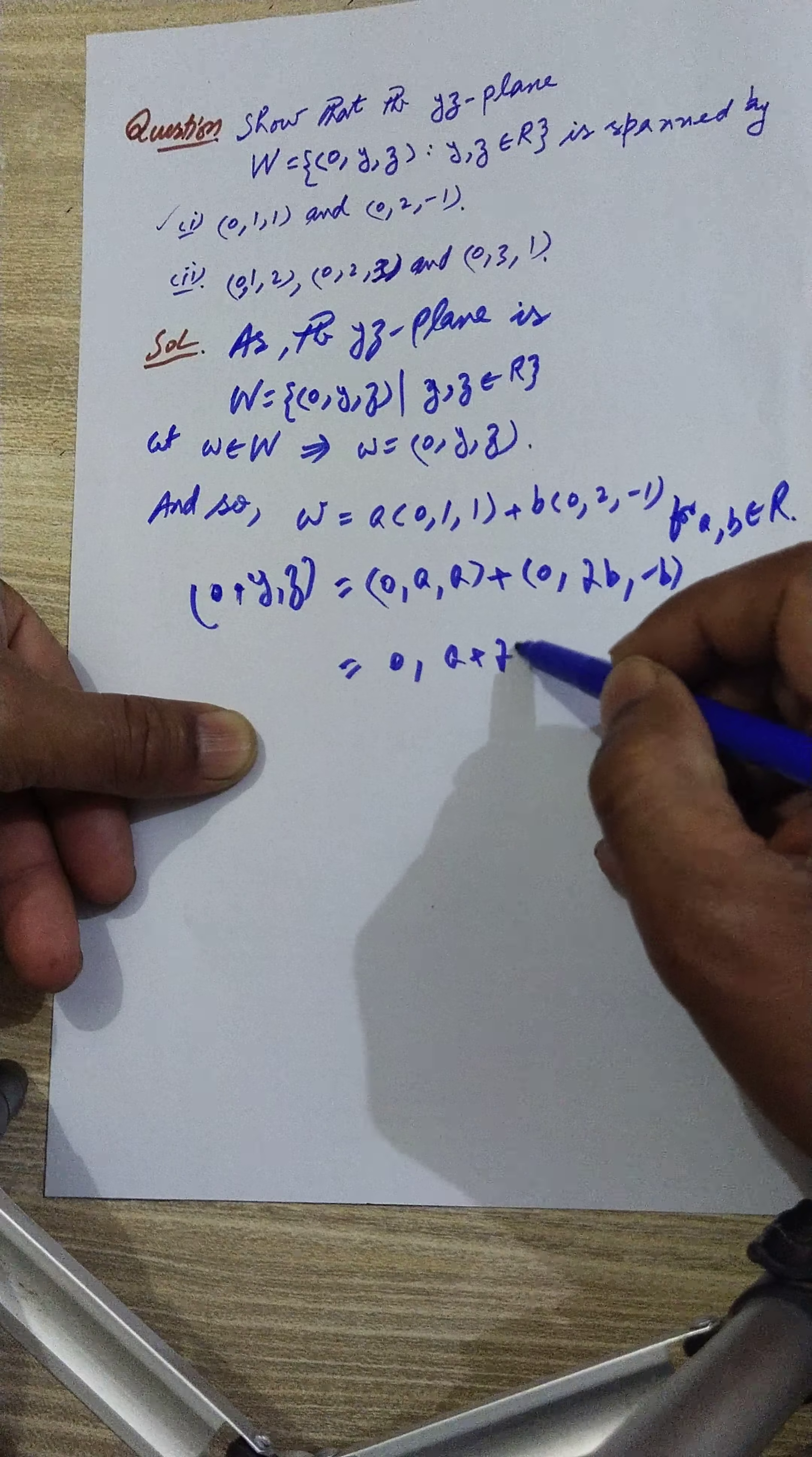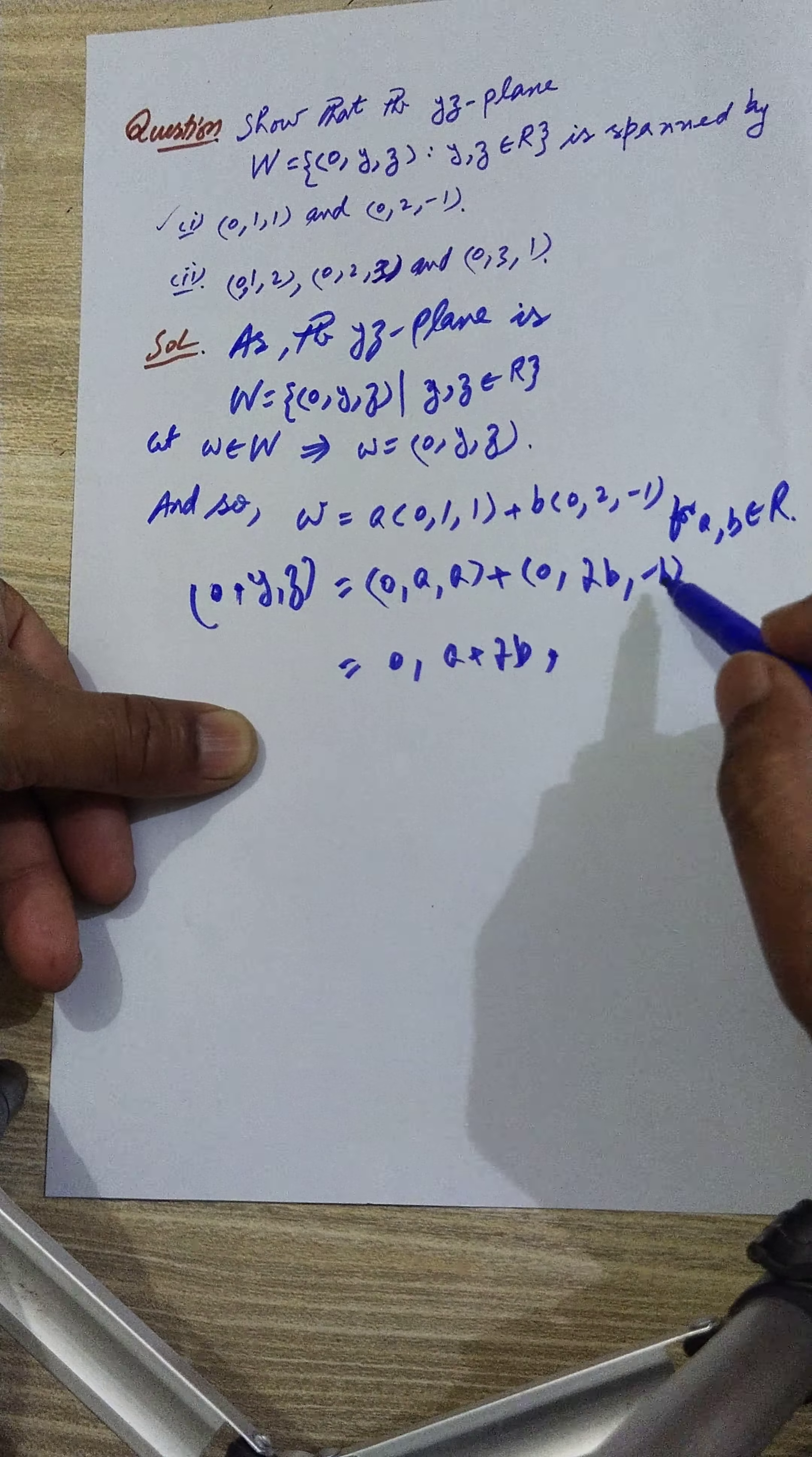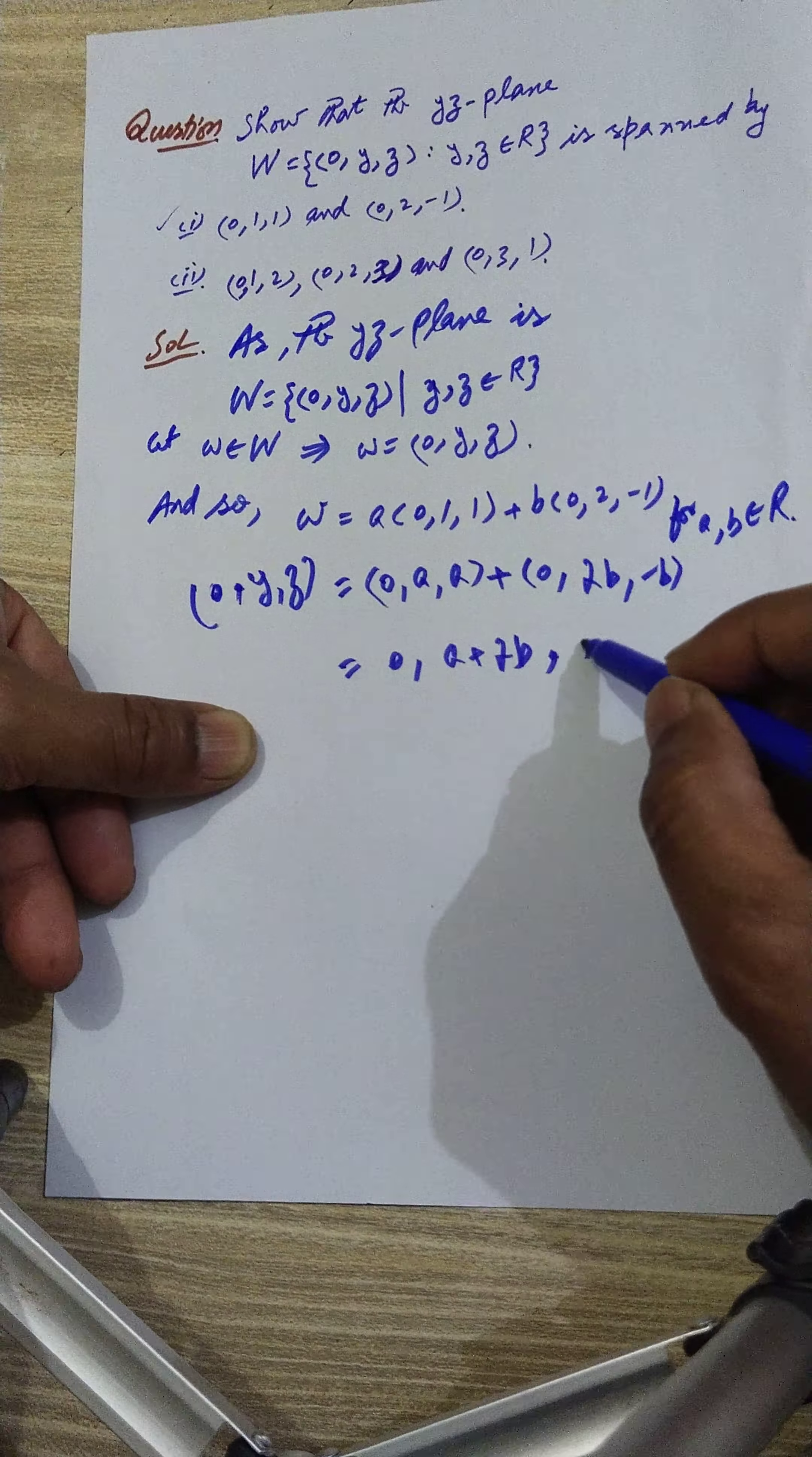Now when we add these, 0 plus 0 becomes 0, a plus 2b, that is the second, and minus b. When we add these, a minus b is the third. What came here?